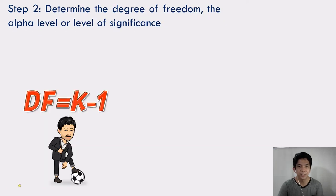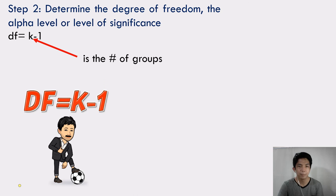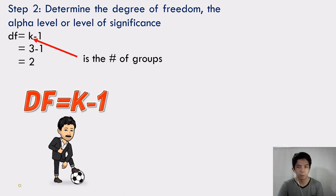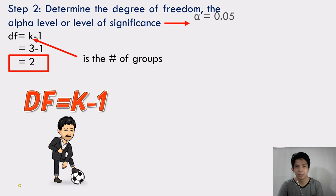Step 2: Determine the degree of freedom, the alpha level, or level of significance. DF = k − 1, where k is the number of groups. We have 3 groups, so 3 − 1 = 2. Our degree of freedom is 2, and our level of significance is 0.05.